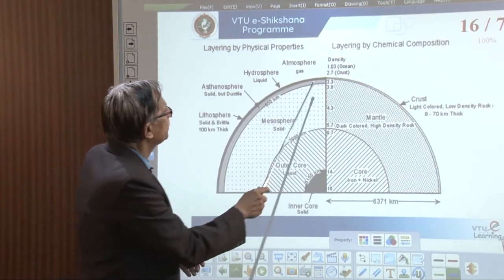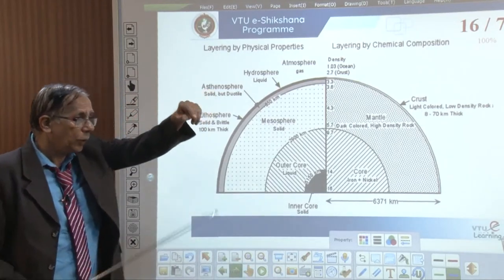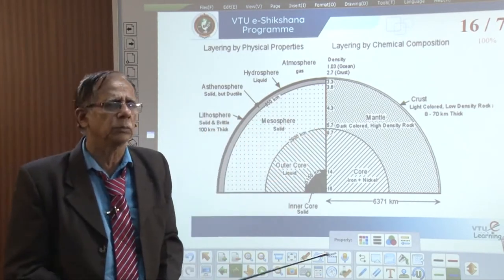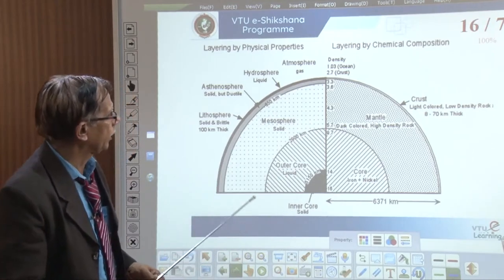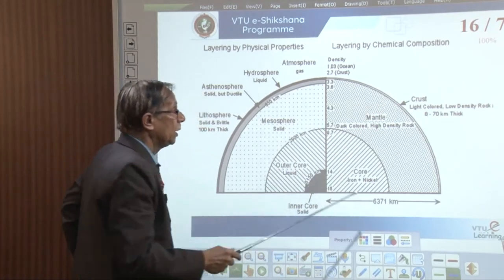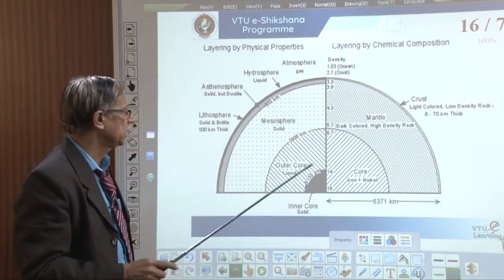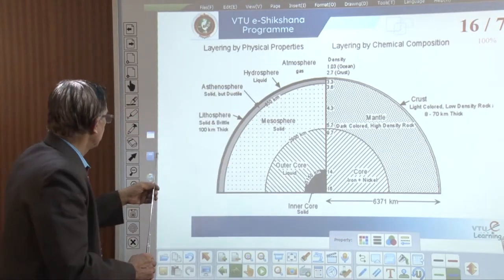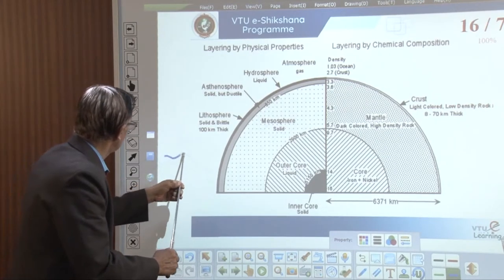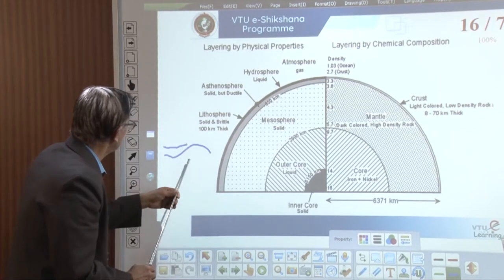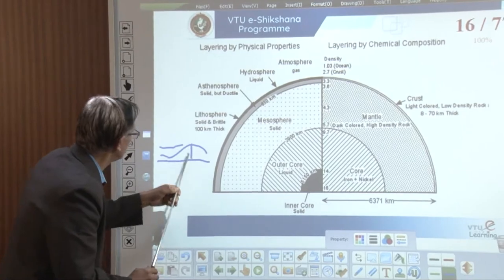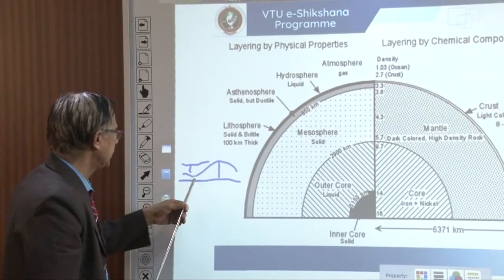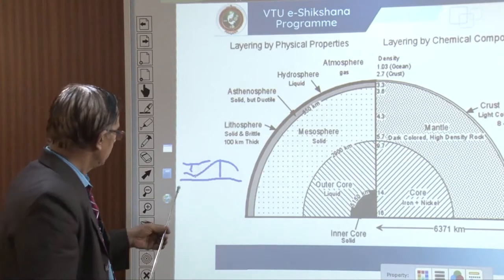The crust covers 71% of the surface with sea on top, and it becomes thin below the ocean. Below the mountain, the crust extends up to 60 kilometers; below the sea, the crust may be only 6 to 12 kilometers thick. On average, crustal thickness is 40 kilometers.